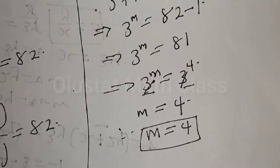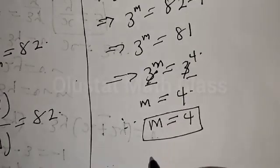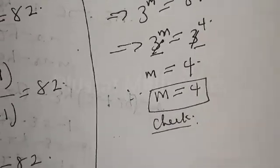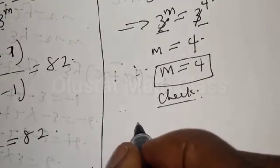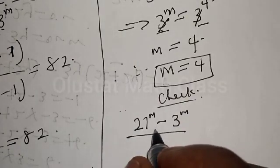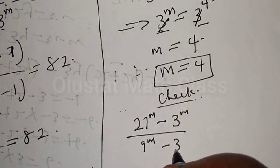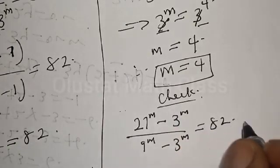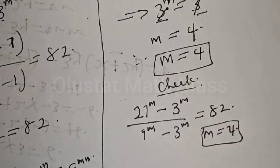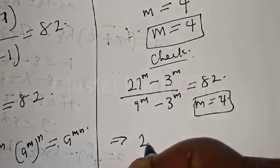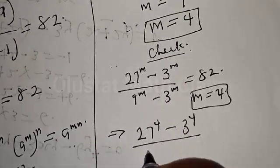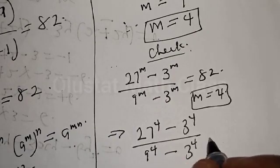We may also check to confirm our answer. From the given equation, we have 27 raised to power m minus 3 raised to power m, over 9 raised to power m minus 3 raised to power m, equal to 82. Our m equals 4. Let's substitute: 27 raised to power 4 minus 3 raised to power 4, over 9 raised to power 4 minus 3 raised to power 4.